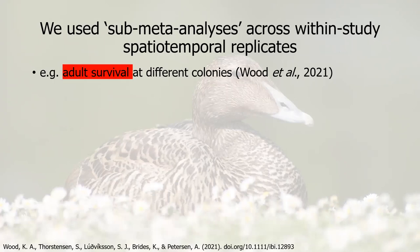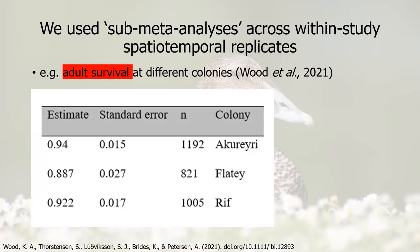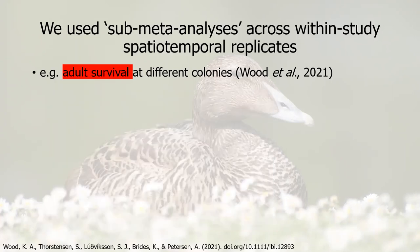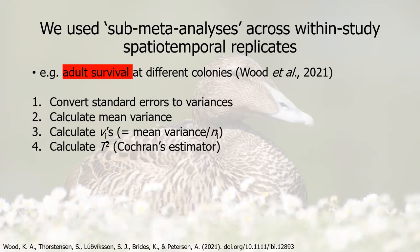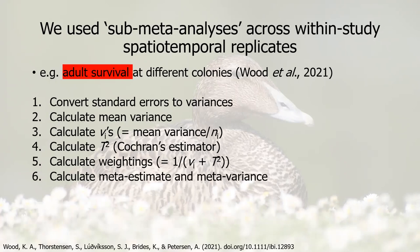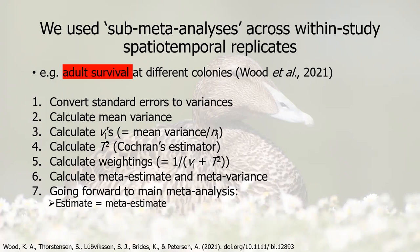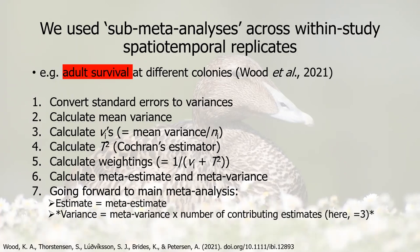To show more practically what we were considering: the example of Wood et al. with adult survival across different colonies presents three estimates of adult survival with associated standard errors and sample sizes. We apply the overall methodology of our meta-analysis to this study. We first convert the standard errors to variances, calculate a mean variance across those three estimates, calculate those v_i values — mean variance divided by the sample size for each estimate — calculate the τ² Cochran's estimator, and from those calculate a meta-estimate and meta-variance at the study level. What we then send forward to the main meta-analysis is that meta-estimate, and the variance is the meta-variance multiplied by the number of contributing estimates, to allow compatibility with calculated variances for other studies that haven't undergone our sub-meta-analysis.